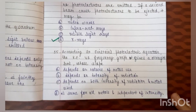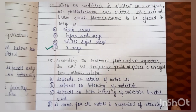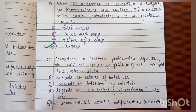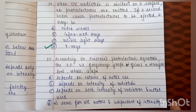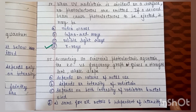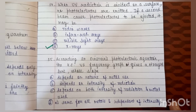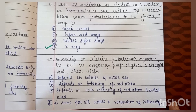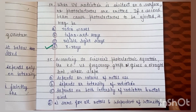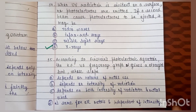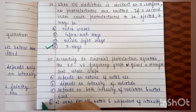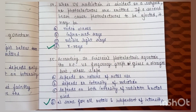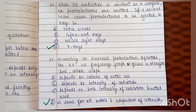Question number 15: according to Einstein's photoelectric equation, the kinetic energy versus frequency graph gives a straight line — where the slope is? The correct answer is D. These are some questions related to the chapter. Thank you.